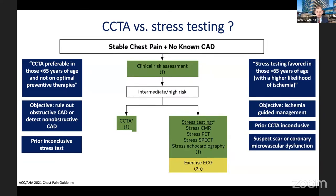If a patient previously had equivocal stress SPECT or stress MR, consider CT next time. Conversely, if a prior CT was inconclusive or showed a moderate lesion, consider a stress test instead. There is no single perfect test. CT is not always the right test for everyone.